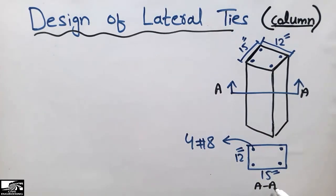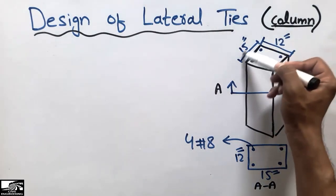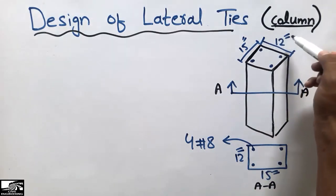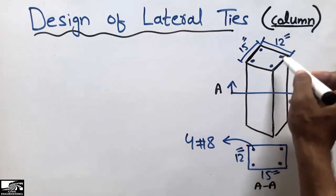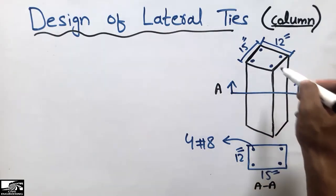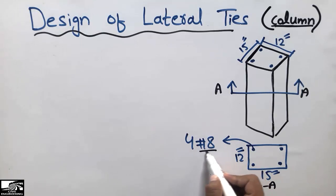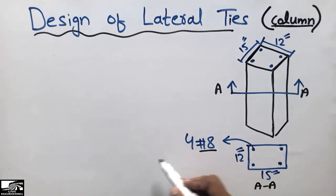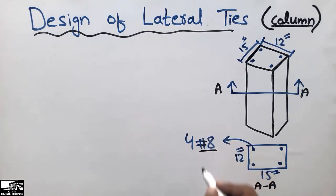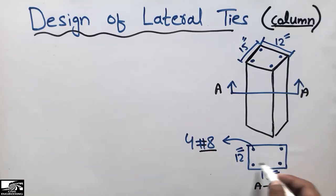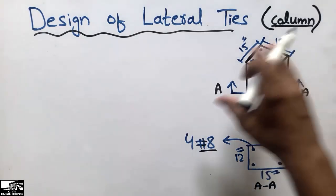The column cross-section has two dimensions: one is 15 inches and the other is 12 inches. There are four main longitudinal bars used — these are number eight bars in the American system, where numbers are used to represent bar sizes. So four number eight bars are used here, as seen in the detail given to us.